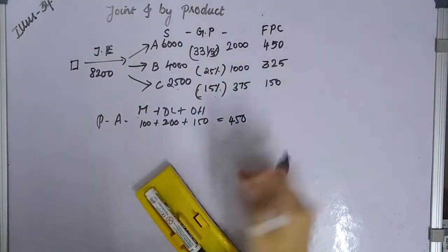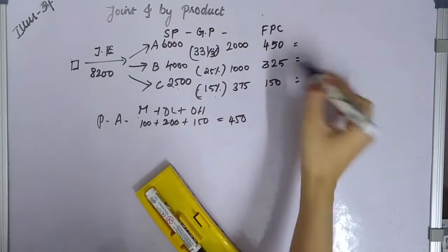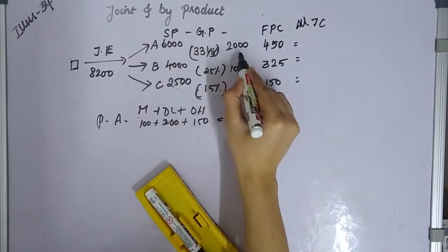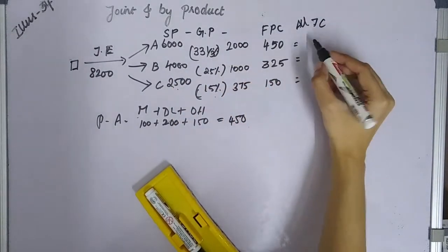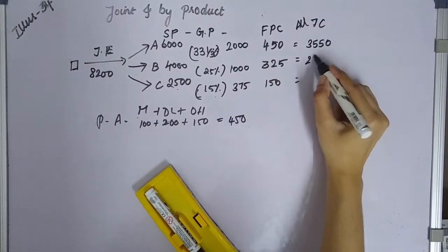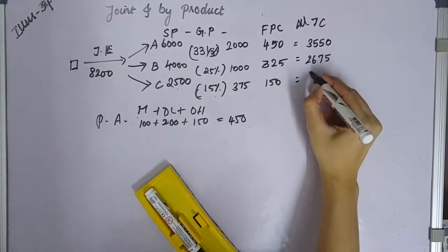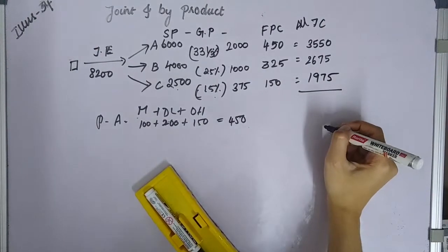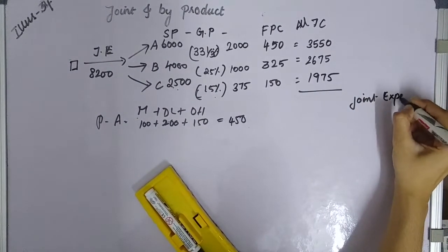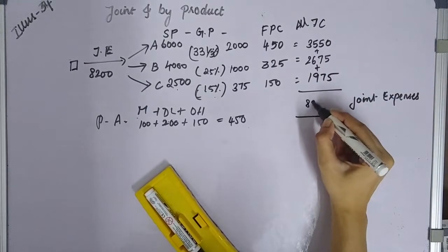At the selling price level, we have gross profit and further cost. The allocated joint cost is: 6000 minus 2000 minus 450 equals 3550. Next, 4000 minus 1000 minus 325 gives us 2675. Then 2500 minus 375 minus 150 gives us 1975. When we add these together, the total joint expenses equal 8,200.